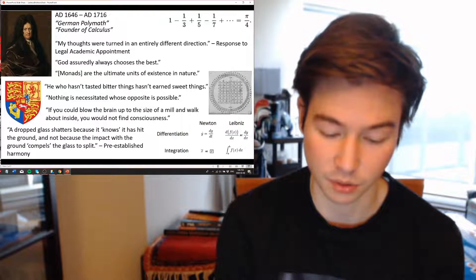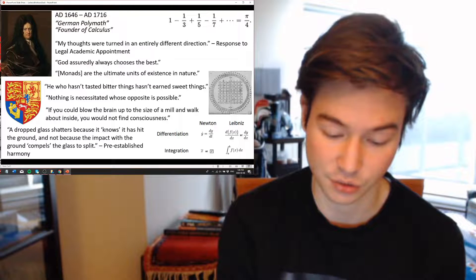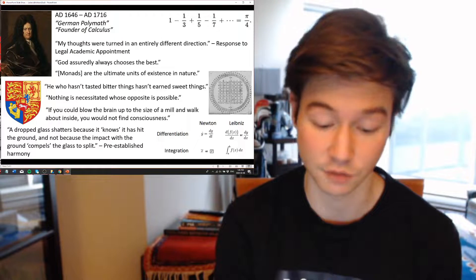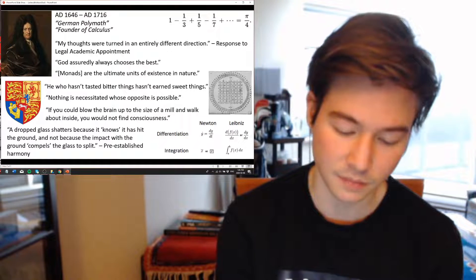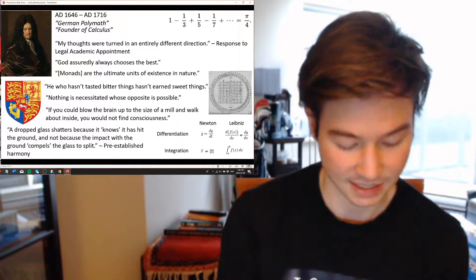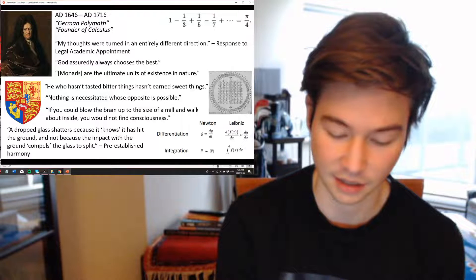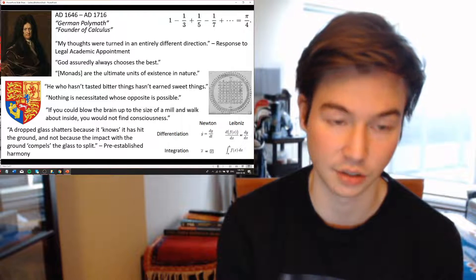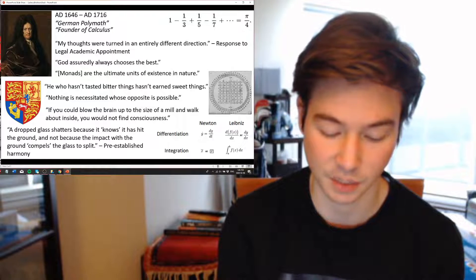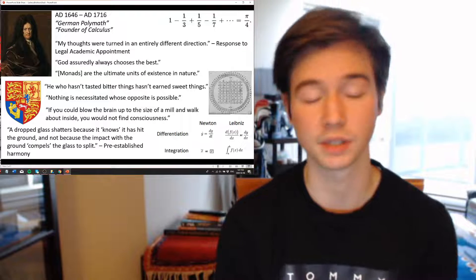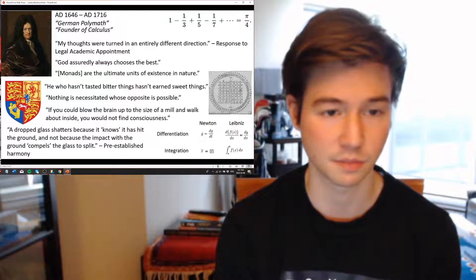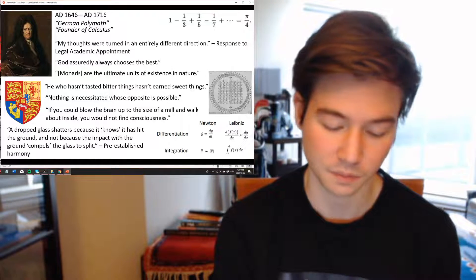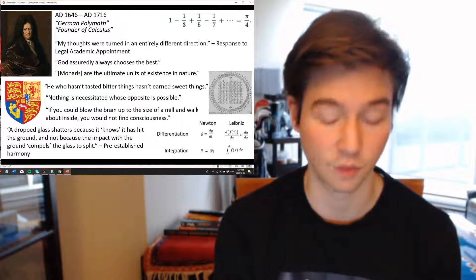In London, he met Henry Oldenburg and John Collins. He met the Royal Society and demonstrated in 1670 his calculating machine, which could do addition, subtraction, multiplication, and division, and he was quickly made an external member of the Royal Society. The Elector died in 1673, so he had to have a new patron.